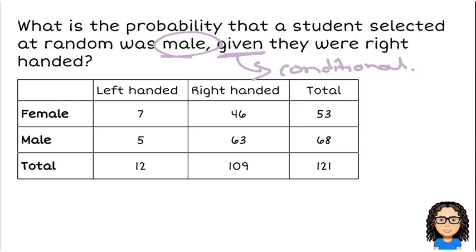So this is talking about a subgroup. So given that they were right-handed, I know that they were right-handed. I've got the student in front of me and I know they're right-handed. So it must be one of that group of right-handed.